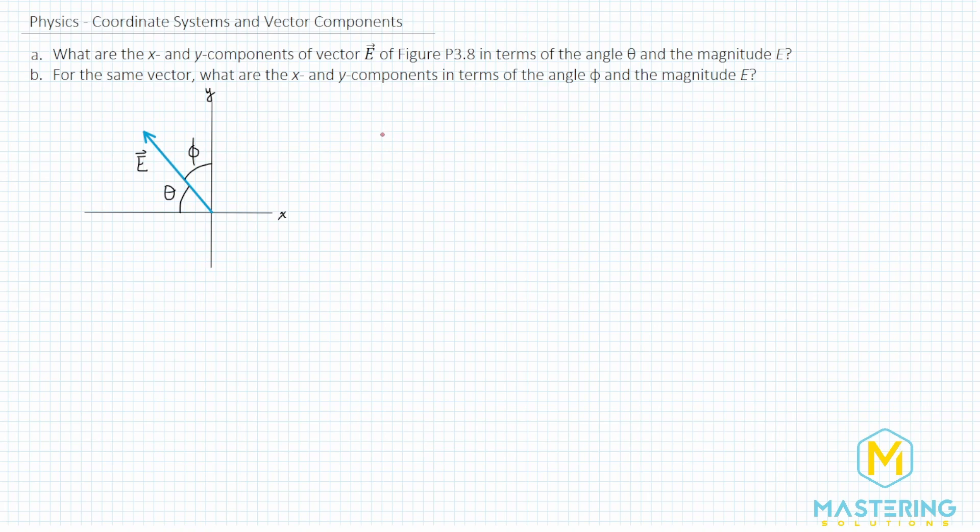So for a, they want us to figure out the x and the y components with respect to angle theta. For the x component, if you look at the grid, all of the x components for this vector E are in the negative x direction. So both for a and b, the x component should be negative. The y component for the vector is going in the positive y direction. So both the y components for both angles will be positive.